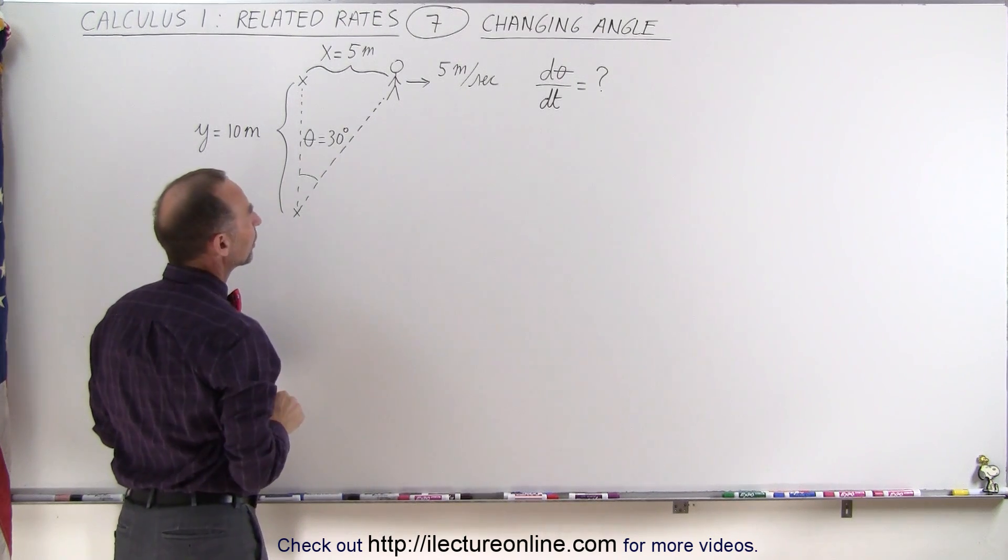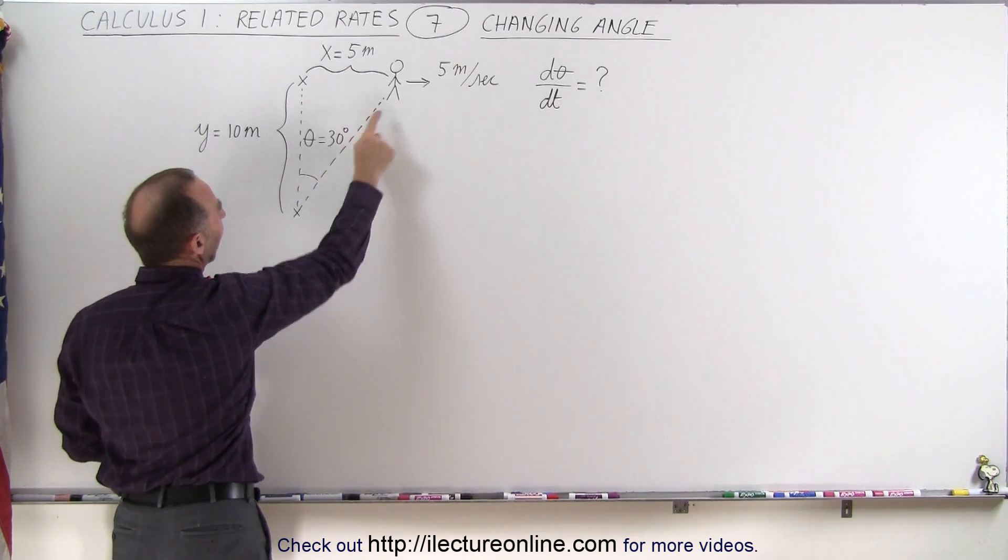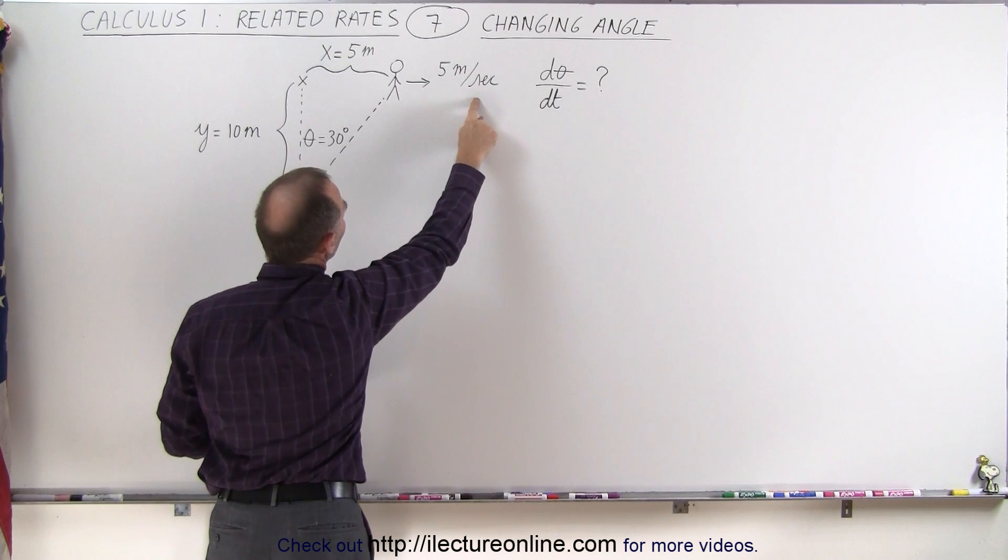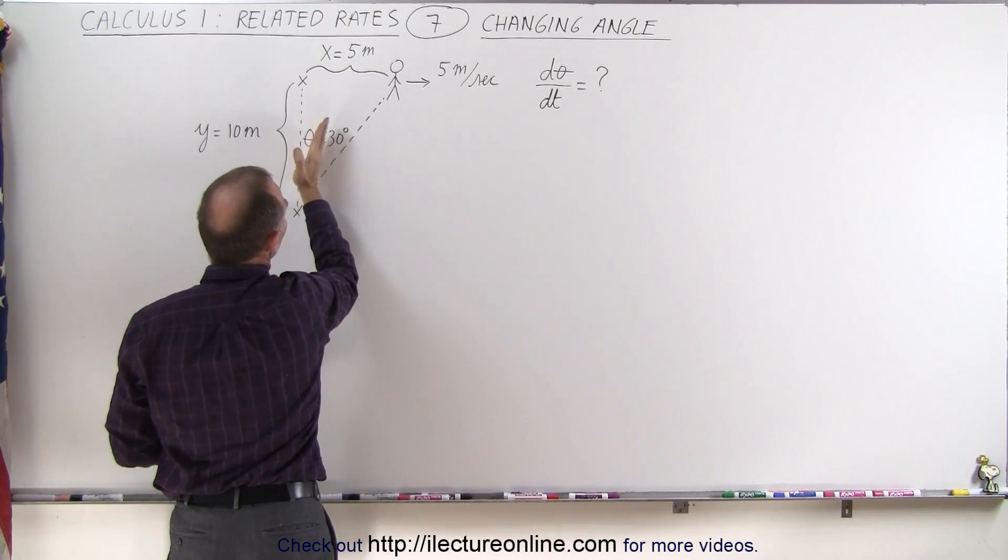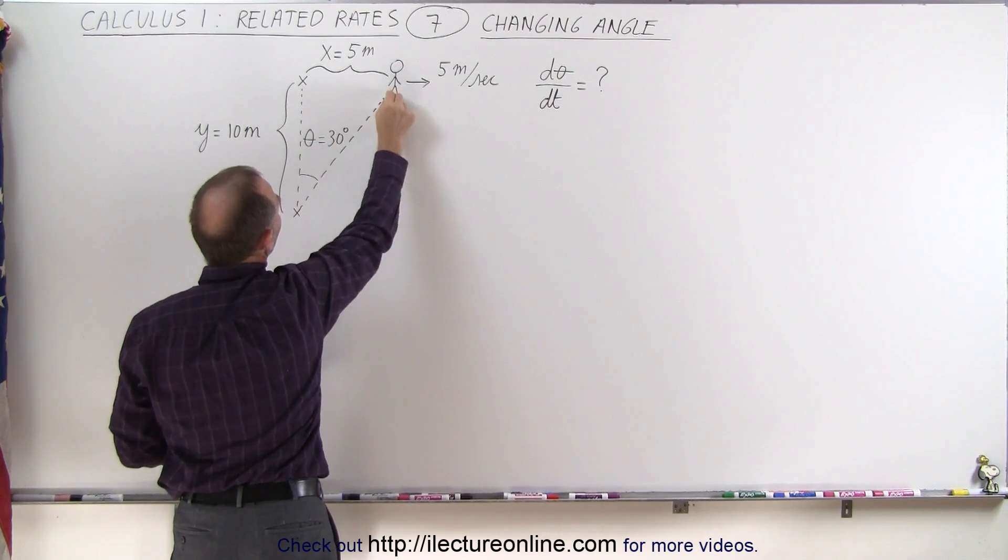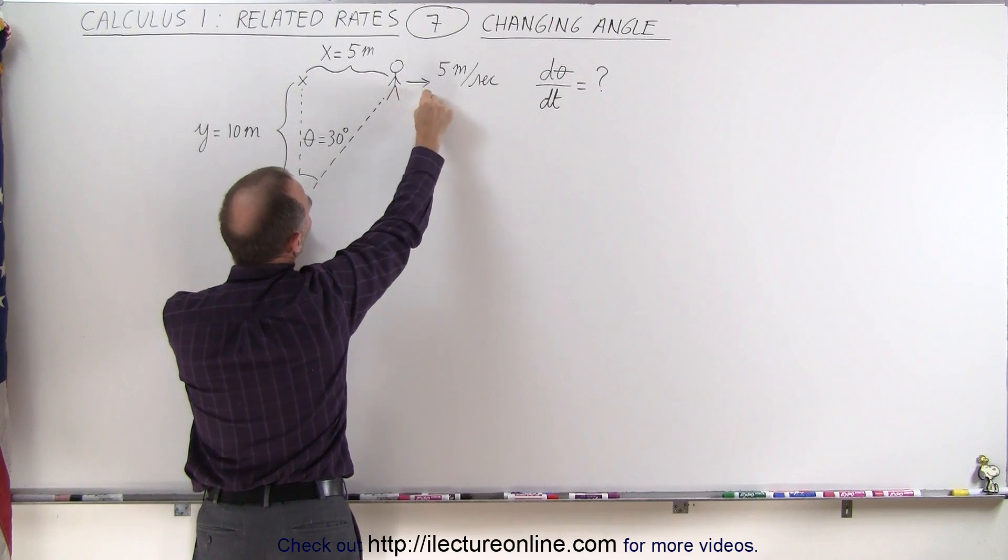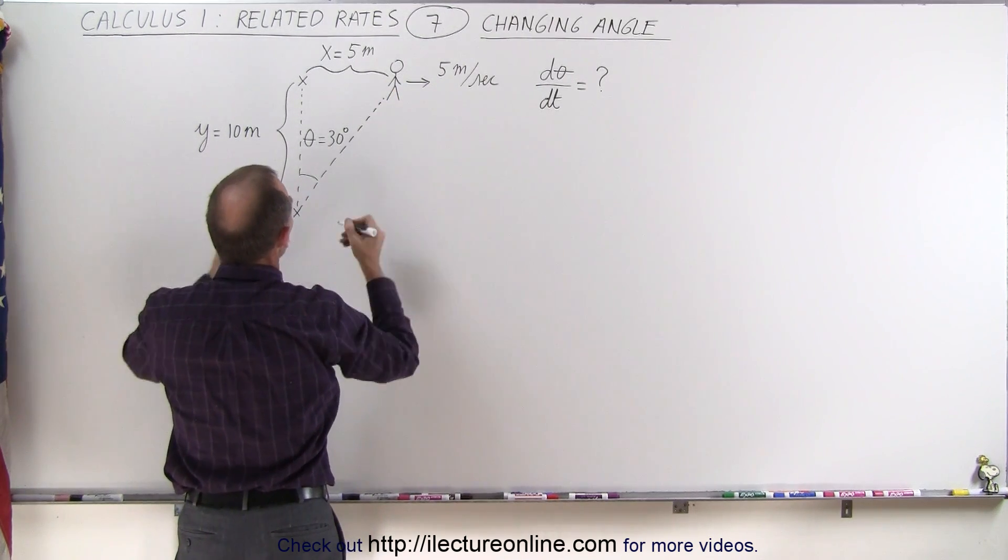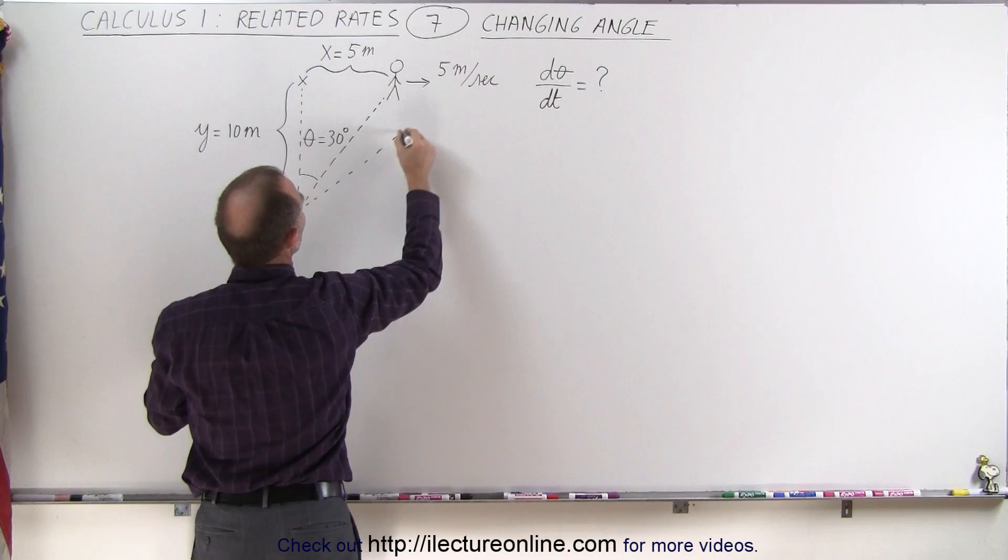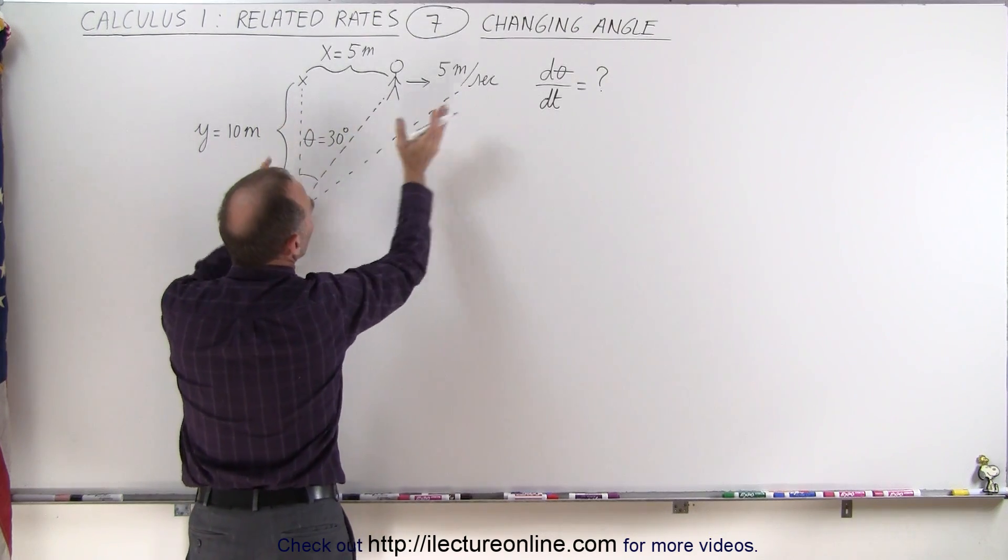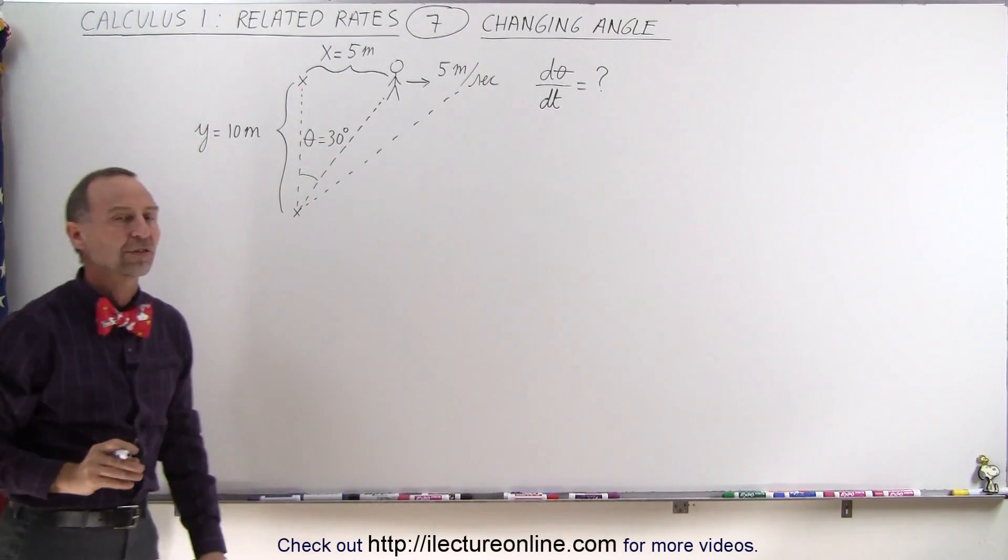The person is 5 meters away from this reference point and 10 meters in the vertical direction. The angle currently is 30 degrees. And we're trying to find as the person is walking away at 5 meters per second, how fast is this angle changing as this line is keeping pace with the person. So as the person walks away, you can see that this angle is getting larger and we're trying to find the rate of change of that angle.